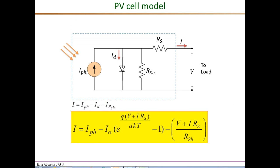The figure shows the single diode-based PV cell model together with the parasitic resistances. The photon current IPH is a function of the solar irradiance level. The equation relating the PV current and voltage is shown here, and the I-versus-V current-voltage as well as the power-versus-voltage characteristics are both essentially derived from this equation.